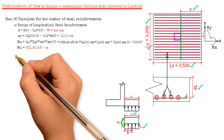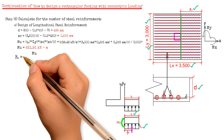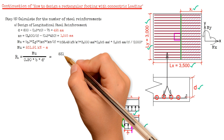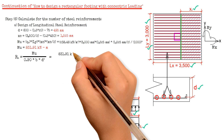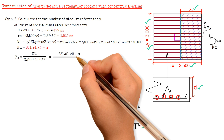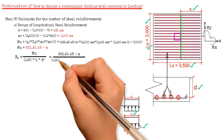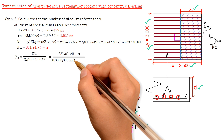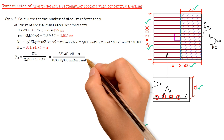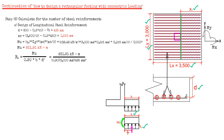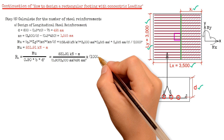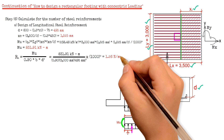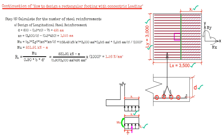Then we will calculate for R sub N, which equals the moment MU 831.91 kNm, divided by 0.9 times the width B 3000 mm, times the square of the effective depth D 495 mm, multiplied by the square of 1000. That gives us a value of 1.26 N per square millimeter.